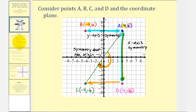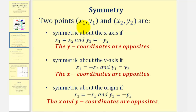So to summarize: if we have two points, and the x-coordinates are equal, and the y-coordinates are opposites, then we have symmetry about the x-axis. If the x-coordinates are opposites and the y-coordinates are the same, then we have symmetry about the y-axis. And finally, if the x-coordinates are opposites and the y-coordinates are opposites, we have symmetry about the origin.